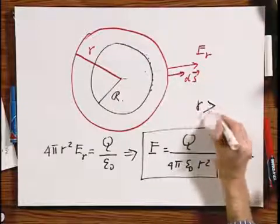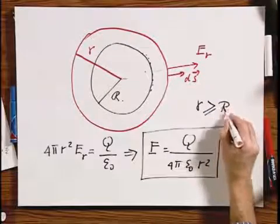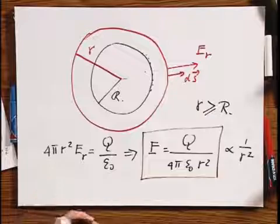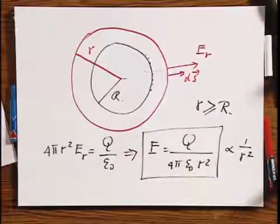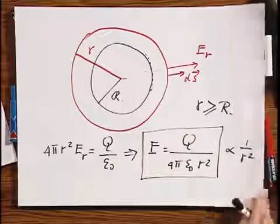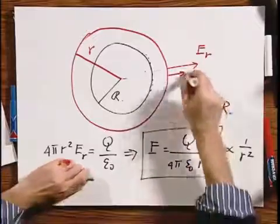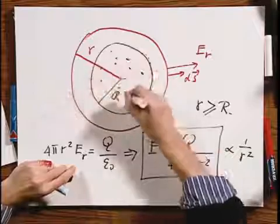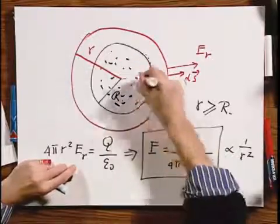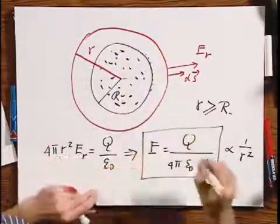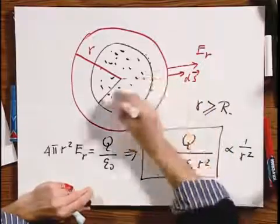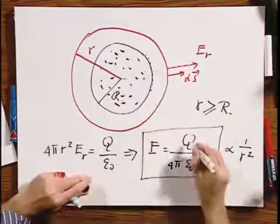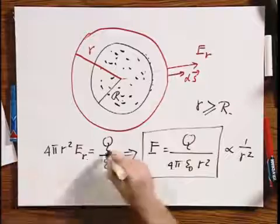And this holds as long as R is larger or equal than R. And of course you can put in some numbers and then you'll get some answers. And this is always true. This is even true if this were not a metal and if the charges were uniformly distributed throughout. Then the answer outside the radius capital R would still be correct, because I have still applied Gauss's law.